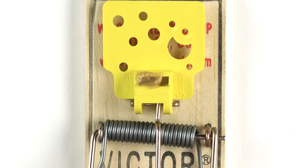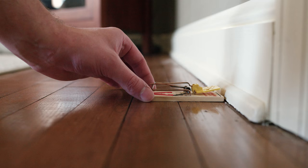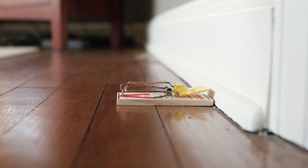Place the trap along the wall or where you've seen signs of rodent activity. The end of the trap with the yellow petal should be flush against the wall where rodents travel.